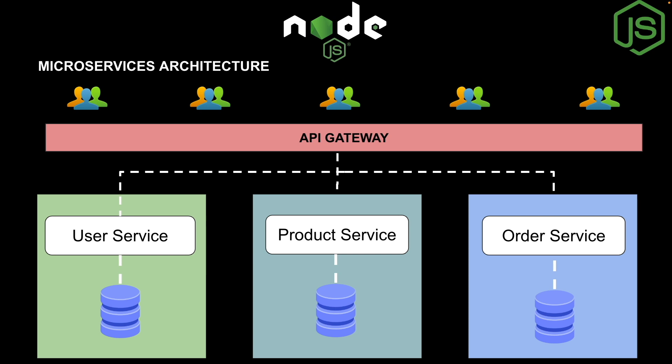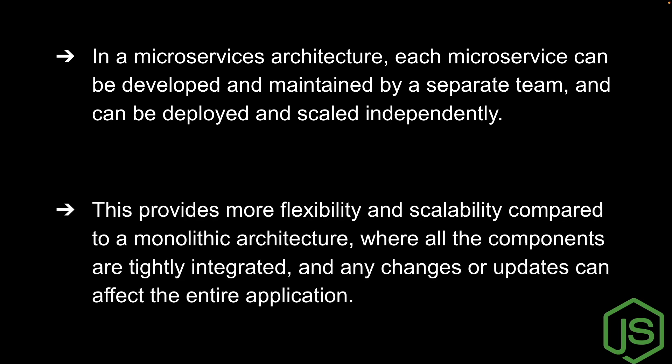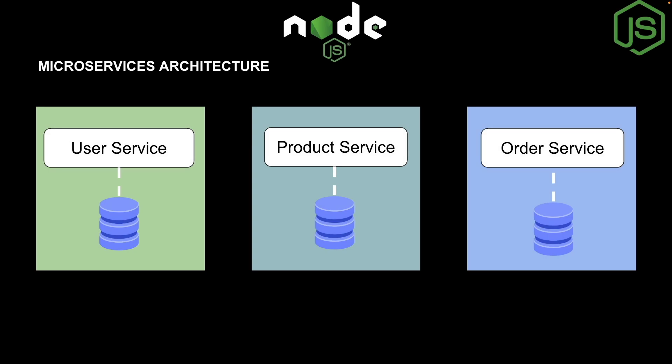All three services can be built with different technologies since they have individual databases and specific functionality — they're not dependent on a single technology stack. In microservices architecture, each microservice can be developed and maintained by a separate team and deployed and scaled independently, providing more flexibility and scalability compared to monolithic architecture where all components are tightly integrated.